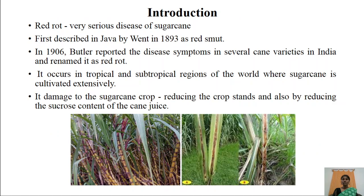Let me begin with the introduction. Red rot is a very serious disease of sugarcane plant which was first described in Java by Wendt in 1893 as red smut. In 1906, Butler reported the disease symptoms in several cane varieties growing in India and renamed this disease as red rot. It occurs in tropical and subtropical regions of the world where sugarcane is cultivated extensively.